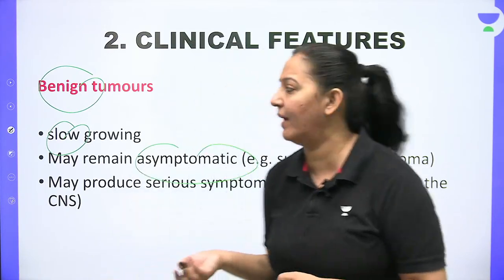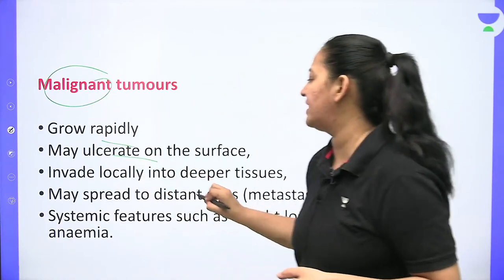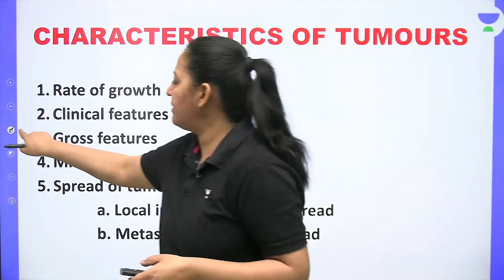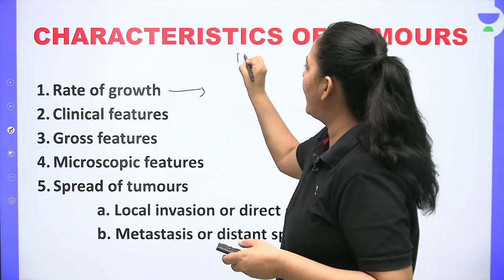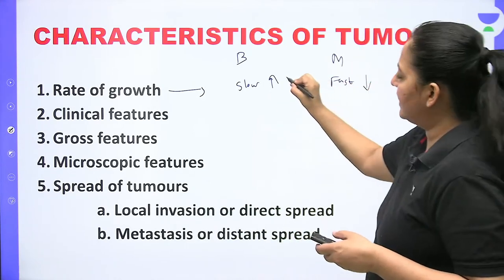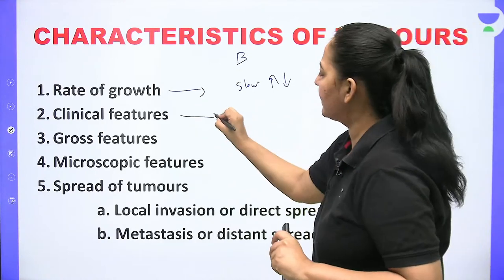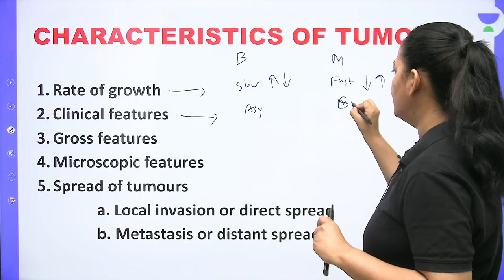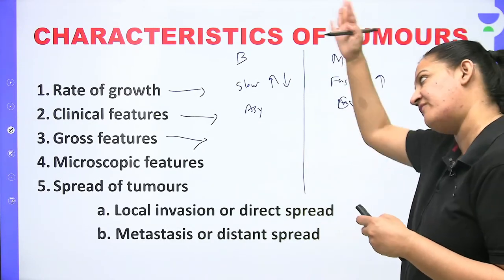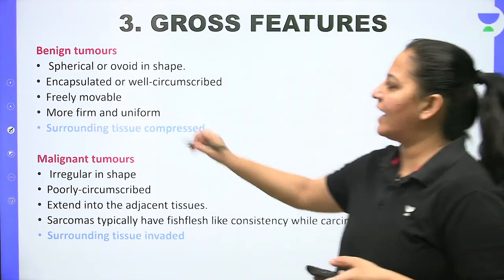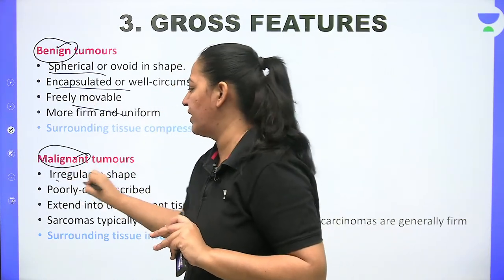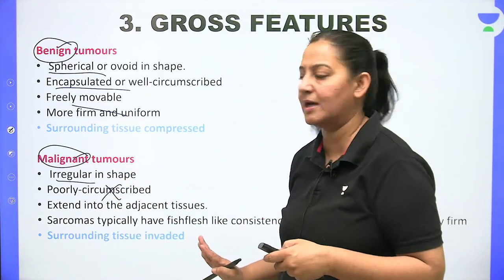The second feature is pleomorphism — variation in shape and size of cells. Normally all cells look the same (like schoolboys in uniform). In malignancy, cells vary in shape and size — some small, some large, some medium. This is the hallmark of malignancy. The third feature is increased NC (nucleus-to-cytoplasm) ratio. In malignancy, the nucleus is enlarged and cytoplasm is proportionally less, so the NC ratio increases. Normal NC ratio is 1:4 (0.25); in malignancy it becomes 1:1.